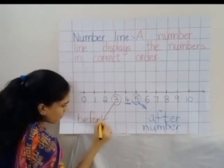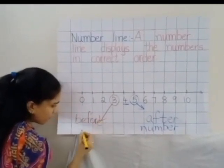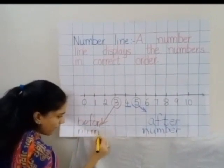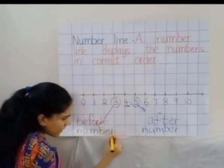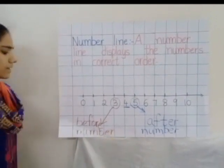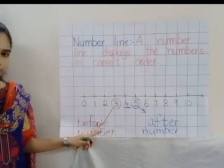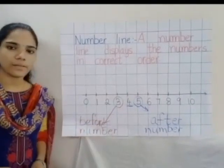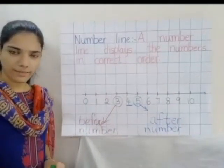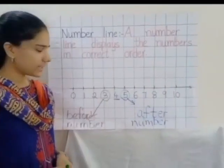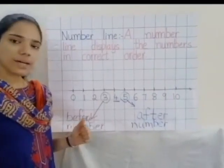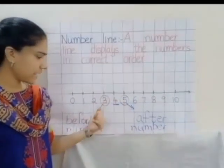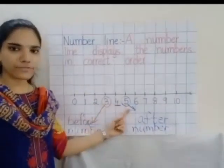B-E-F-O-R-E, before number. B-E-F-O-R-E, before number. Yes children. Now children, which number comes in between 3 and 5 children? Here we have 3 and here we have 5. Which number comes in between? Yes, 4. So 4 will be the between number.